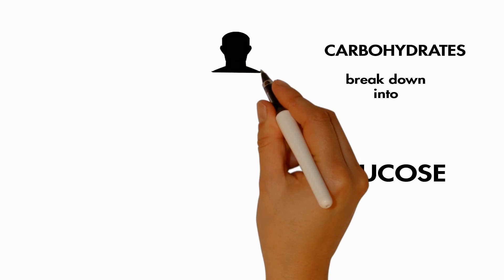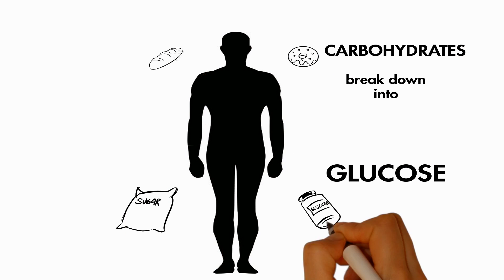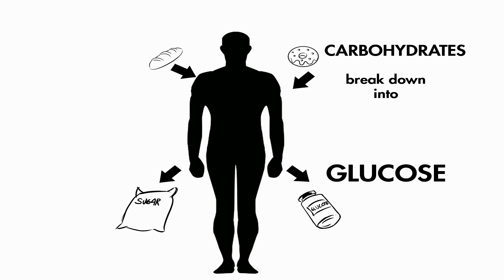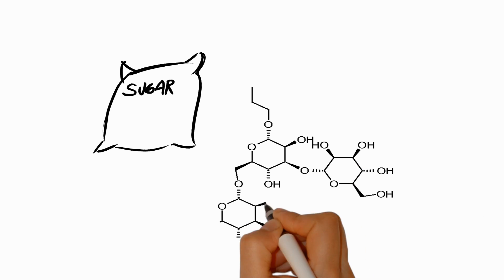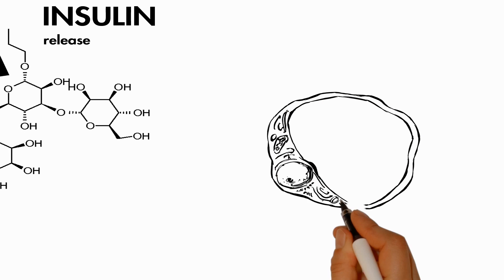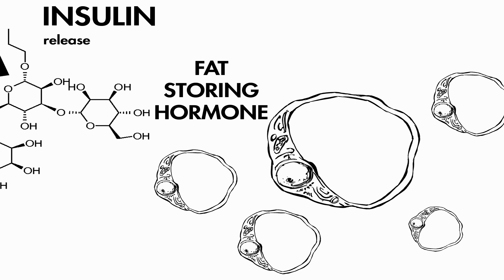When carbohydrates are consumed, the body breaks down those that can be absorbed into glucose, a form of sugar. This sugar can then strongly stimulate the release of insulin, a powerful fat-storing hormone.